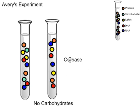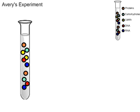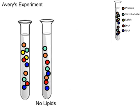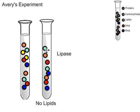Next he thought maybe it's lipids. He took lipase and mixed it in. The lipase removed the yellow lipid components, so there were no lipids in the dead S strain. He mixed it with live R strain and the mouse died — transformation still happened. So he knew it was not lipids.